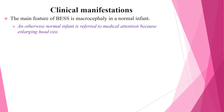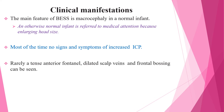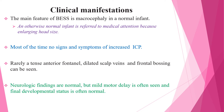When we see the clinical manifestations, the main feature of benign enlargement of subarachnoid space is macrocephaly in an otherwise normal infant referred to medical attention because of an enlarging head size. Most of the time there are no signs or symptoms of increased intracranial pressure. However, rarely a tense anterior fontanel, dilated scalp veins, and frontal bossing can be seen. Neurologic findings are most of the time normal, but mild motor delays are often seen; the final developmental status, however, is normal.